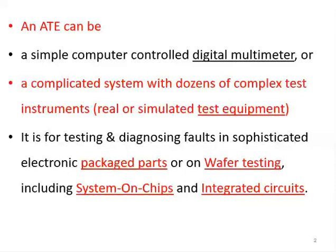Automatic test equipment can be a simple computer which controls measuring devices like digital multimeters and others. Sometimes it can be a complicated system designed for that purpose, having dozens of test instruments within it. The test equipment can also be real hardware or sometimes just simulation software used for testing. Normally this is done in factories where electronics and electrical components are produced, so they are tested before being taken to market.